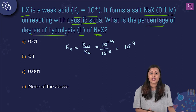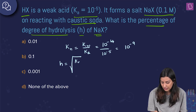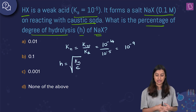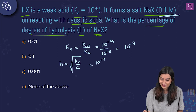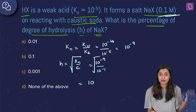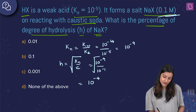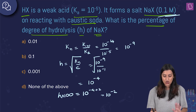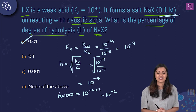The degree of hydrolysis h = √(Kh / c) = √(10⁻⁹ / 10⁻¹) = √(10⁻⁸) = 10⁻⁴. The percentage degree of hydrolysis is h × 100 = 10⁻⁴ × 100 = 10⁻² = 0.01. So option A, 0.01, is the correct answer.